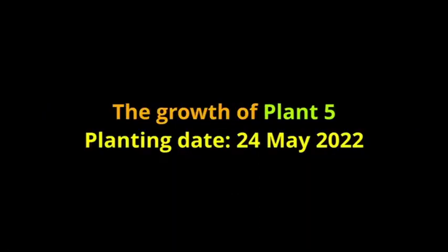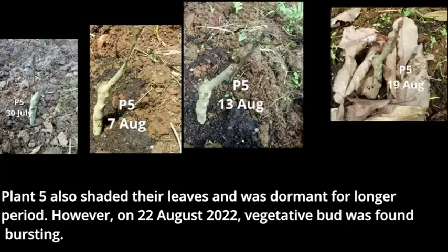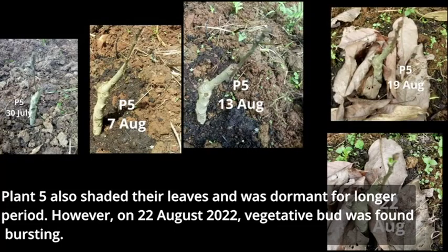Plant five also shed its leaves and remained dormant for a longer period, but at day 22, a new axillary bud was found bursting.